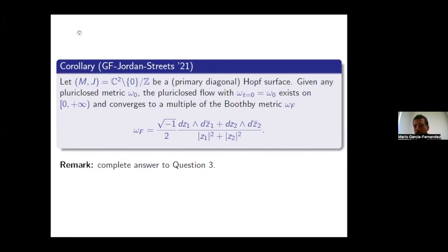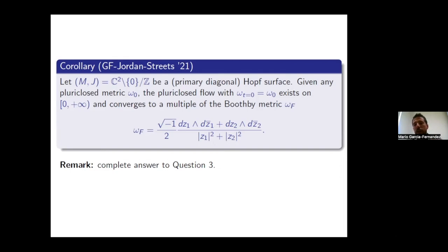As a corollary, for the Hopf surface: the pluriclosed flow with arbitrary initial data converges to a multiple of the Boothby metric. This follows from the previous theorem because the Hopf surface is Bismuth-smooth-flat, and on the Hopf surface the relevant Bott-Chern cohomology group is one-dimensional, so the cohomological condition is automatically satisfied.